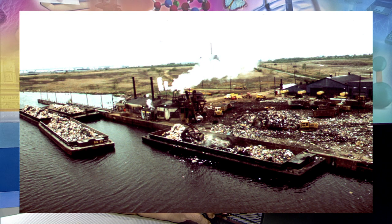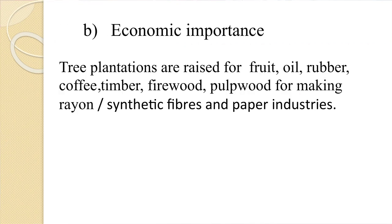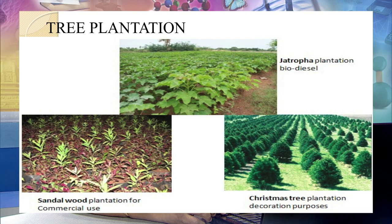Next is plantation forest. Plantation forests are generally monocultures like oil palm, rubber, coffee, etc. They have trees of approximately the same age and are highly susceptible to pathogens. Their poor species diversity requires human involvement. Recently, plantation of Jatropha has become very popular for obtaining biodiesel. Tree plantations are raised for fruit, oil, rubber, coffee, timber, firewood, and pulp wood for making rayon, synthetic fiber, and paper industries.